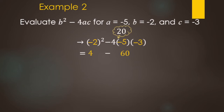We've done exponents and multiplication. Next up is addition and subtraction — just a subtract here: 4 minus 60. We have more negatives than positives. Think of it like money: you have $4 but you have to pay $60. You don't have enough, so the answer is negative. To find how much remains to pay: 60 minus 4 makes 56, so the answer is negative 56.